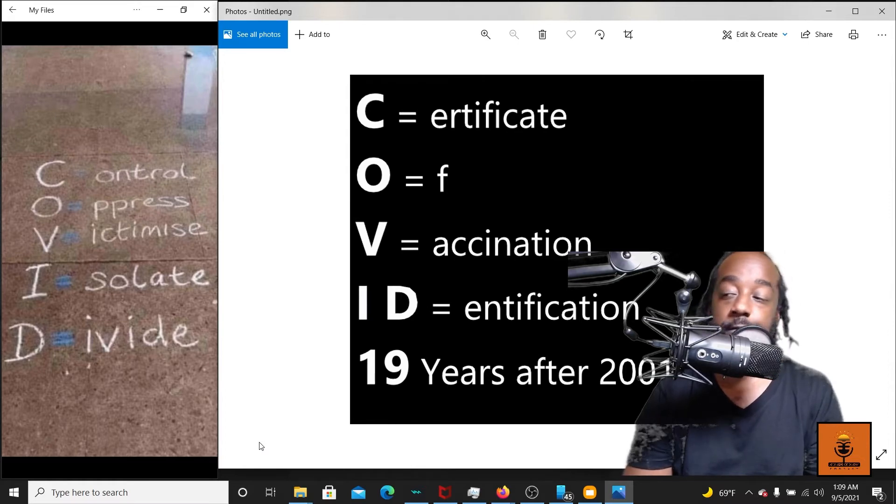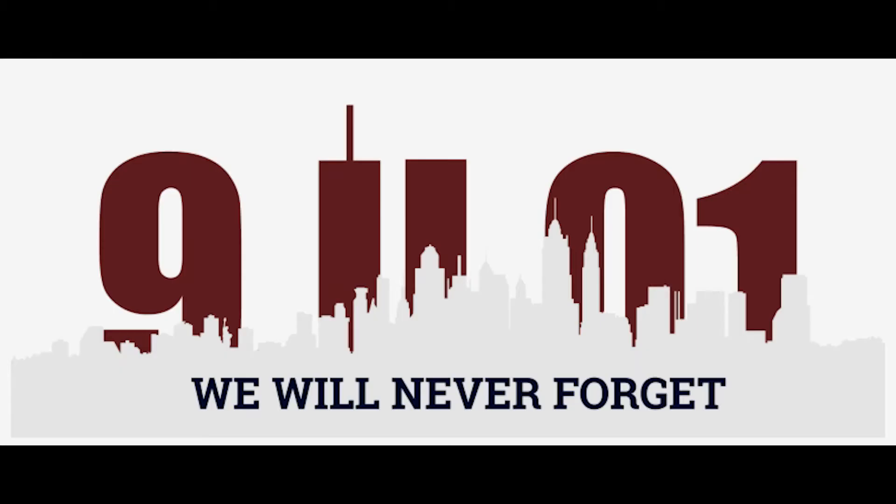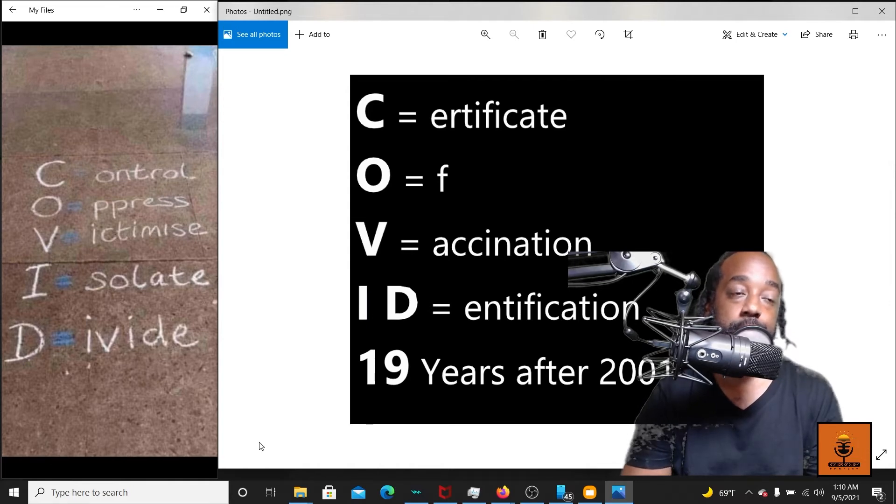Now I heard a pastor say online that this COVID-19 thing was—he broke it down. He said it was gonna eventually be a Certificate Of Vaccination IDentification. And it actually takes place 19 years after 2001. You do the math. Came on the scene real popular in 2020.